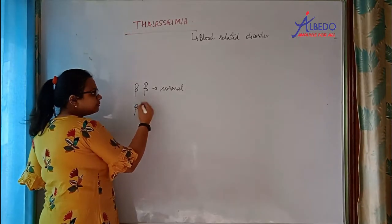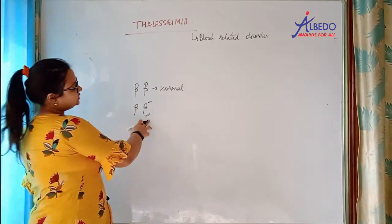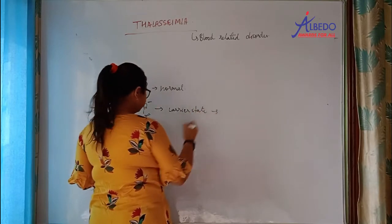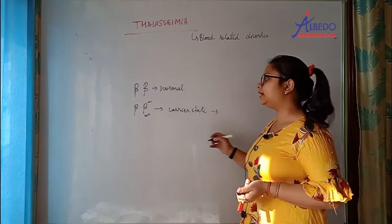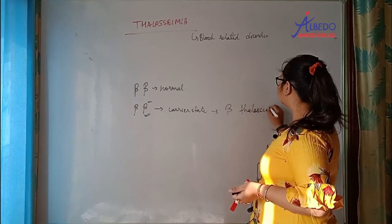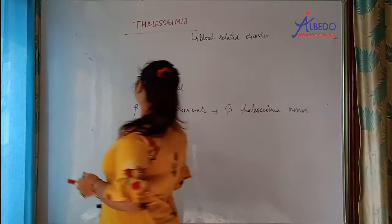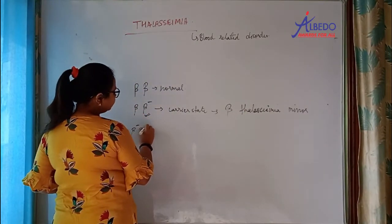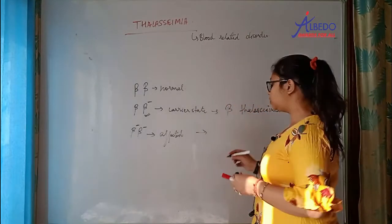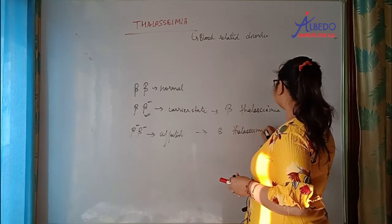So let's talk about beta thalassemia. If someone has one normal beta allele and one affected beta-thalassemia gene, that patient is known as beta thalassemia minor. And if both genes are affected, then the person is affected and is known as beta thalassemia major.